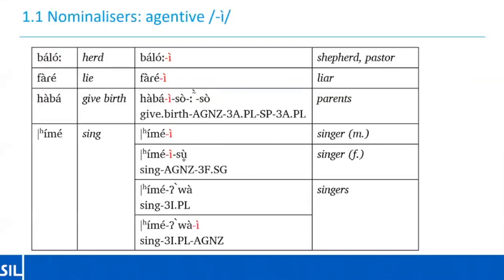Starting off with the nominalizers, the agentive nominalizer is illustrated in this table. It's productive and its suffix attaches to verb stems to derive an agentive noun — something like 'baloi' meaning shepherd or pastor, from 'balo' meaning herd, or 'farei' meaning liar from 'fare' meaning lie. So the 'i' suffix is the nominalizer here. The agentive noun created in this way can be marked as feminine by the addition of a third-person feminine PGN morpheme from the low-tone series, as you can see in the female singer example.